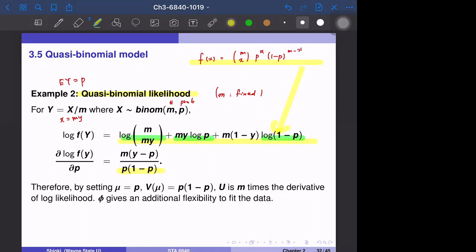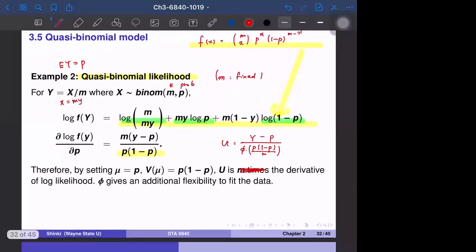Now we still have very similar shape to u_i. So u_i equals y minus parameter p, this is expectation of y, over the variance. The variance is p times 1 minus p over m. So u is the derivative of log likelihood, and this is almost exactly the same as the original shape, but u has another parameter phi here. This phi gives an additional flexibility to fit the data.